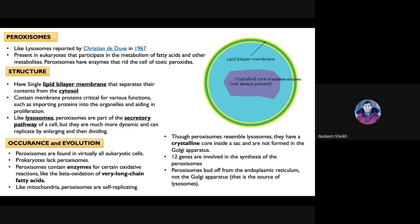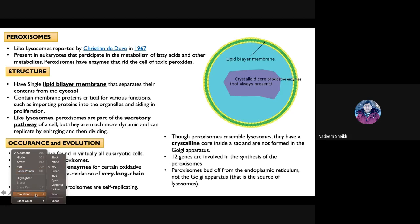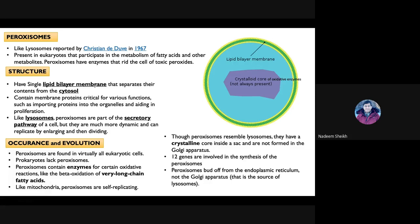Peroxisomes are found specifically in cells involved in the metabolism of fatty acids or other metabolites. They perform a set of detoxification functions and are involved in multiple functions within the cell because of the enzymes they contain. One of these functions is beta-oxidation — the metabolism of fatty acids also starts in peroxisomes.